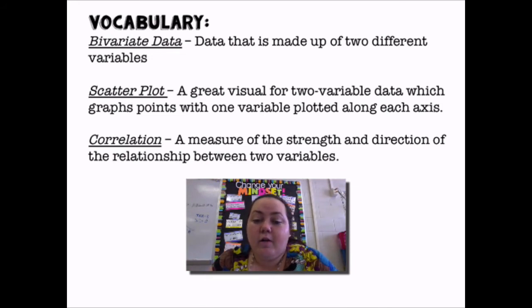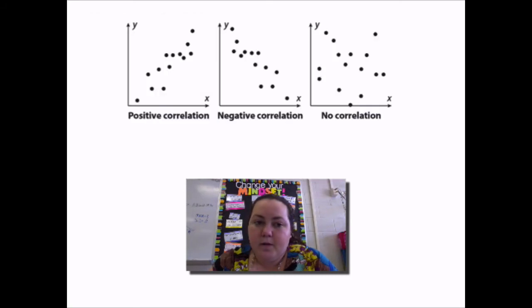Correlation is a measure of the strength and direction of the relationship between the two variables. Here's some scatter plots. As you can see, some of them are going in an upward direction, so those are positively correlated. So that first graph has a positive correlation.